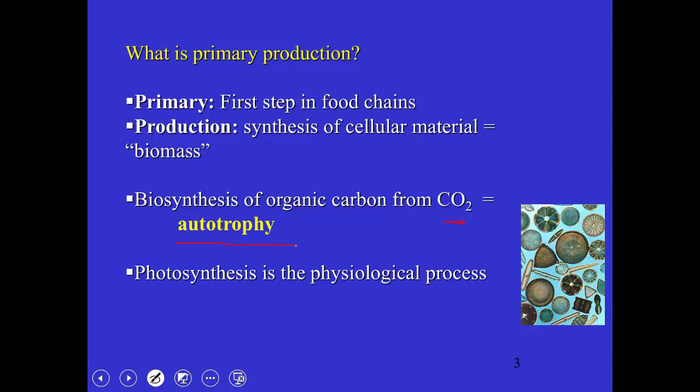Because the source of organic material is CO2, we call this form of metabolism autotrophy. Auto meaning self, trophy meaning food—so they're making their own carbon. The ecological process is primary production; the physiological process is photosynthesis. There are one or two examples of primary production not carried out by photosynthesis that we'll see later in the course. In the whole biosphere it's the plants and algae carrying out photosynthesis—the photoautotrophs. Photo meaning the energy comes from light; autotrophy meaning these organisms fix CO2.